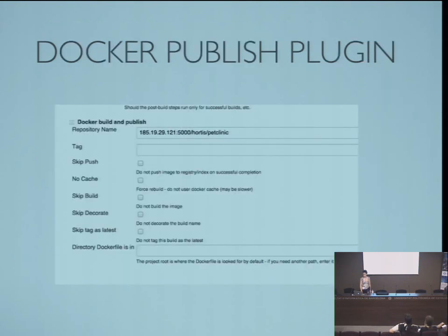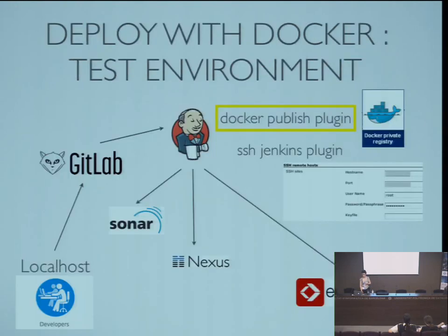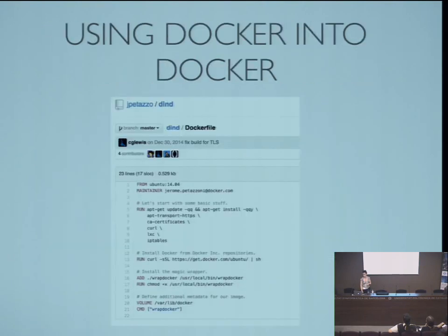The Docker publish plugin is really easy to use — we just specify the repository name, which is the only mandatory field. Since Jenkins runs in a Docker container and needs to execute Docker commands inside a Docker container, we need to run Docker-in-Docker. We can import a specific image available on Docker Hub, written by one of the Docker team members, to make this work.